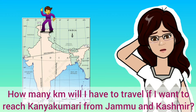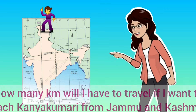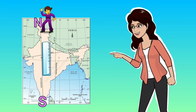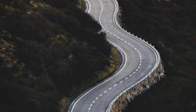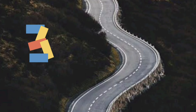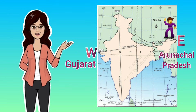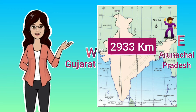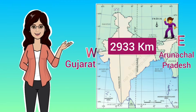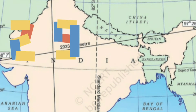How many kilometers would you have to travel to reach Kanyakumari from Jammu and Kashmir? The distance between the northernmost and southernmost point of our country is 3,214 kilometers, though roads are not straight so you'd cover more. Moving from the easternmost point — Arunachal Pradesh — to the westernmost point — Gujarat — the distance is 2,933 kilometers.